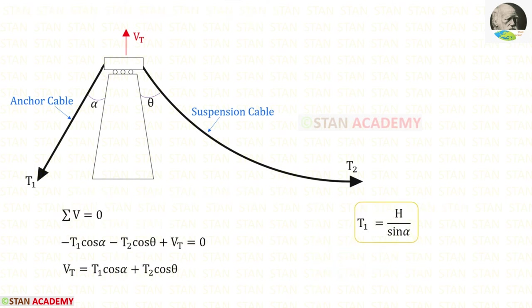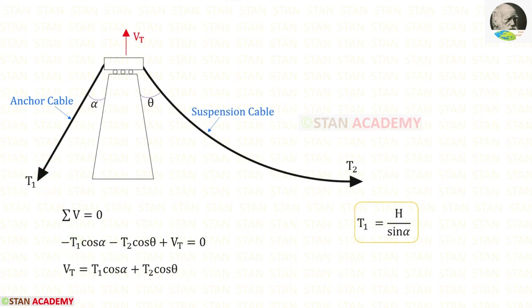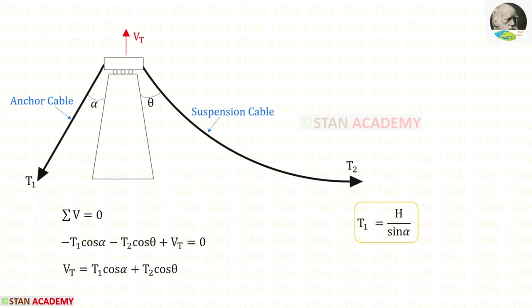Now let us find the vertical force Vt. We have to resolve T1 in the vertical direction. When we do that we will get T1 cos alpha. Since it is acting downwards it will be negative. In the same way, we can resolve T2 in the vertical direction. When we do that we will get T2 cos theta. Since it is acting downwards it will be negative. Vt is acting upwards so it will be positive. We can take these two on the other side.